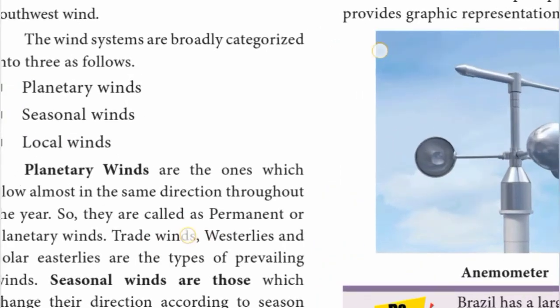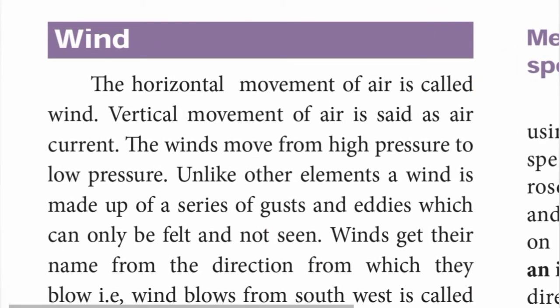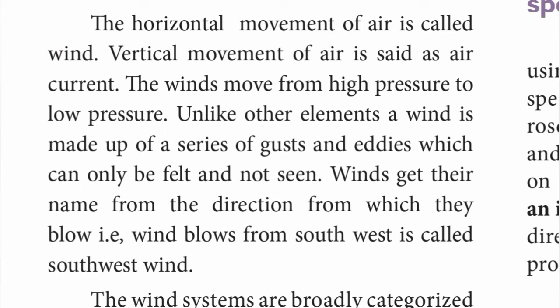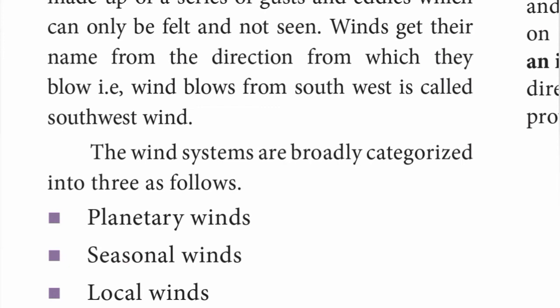The horizontal movement of air is called wind. The vertical movement of air is called air current. The wind moves from high pressure to low pressure. Unlike other elements, the wind is made up of a series of gusts and eddies which can only be felt and not seen. The winds get their name from the direction from which they blow. Wind systems are broadly categorized into three: planetary winds, seasonal winds, and local winds.